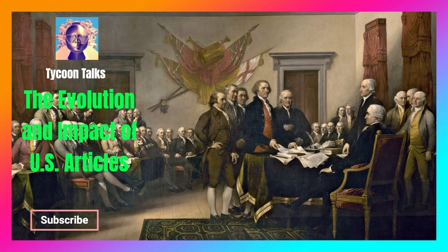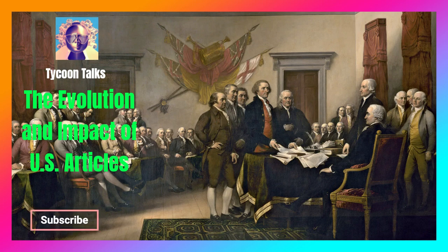Conclusion. In conclusion, the U.S. articles, from the Declaration of Independence to the Constitution and beyond, have shaped America's identity and governance structure, providing a blueprint for democratic ideals and principles worldwide. Their evolution and interpretation reflect the nation's commitment to balancing individual freedoms with collective responsibilities, ensuring that they remain a living testament to the aspirations of we the people. As the United States continues to navigate complex challenges in the 21st century, the enduring legacy of these articles serves as a reminder of the nation's resilience and capacity for self-renewal — a testament to the enduring power of ideas set forth on parchment centuries ago. The ongoing dialogue and interpretation of these documents ensure that they remain relevant guides in shaping the future of American democracy.